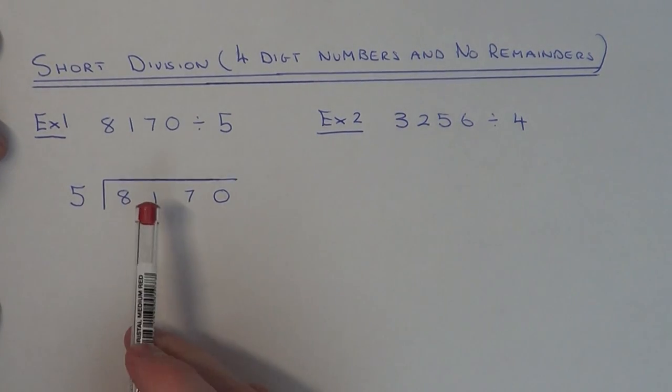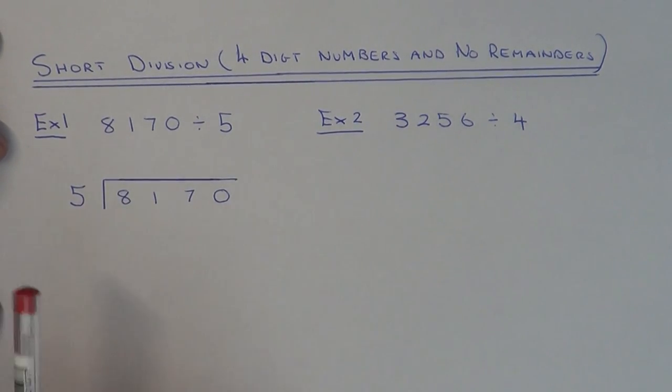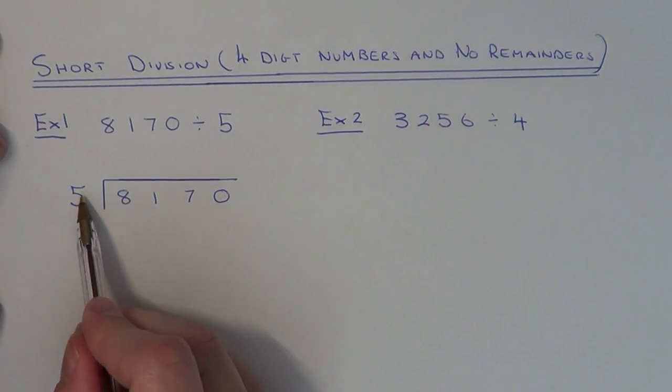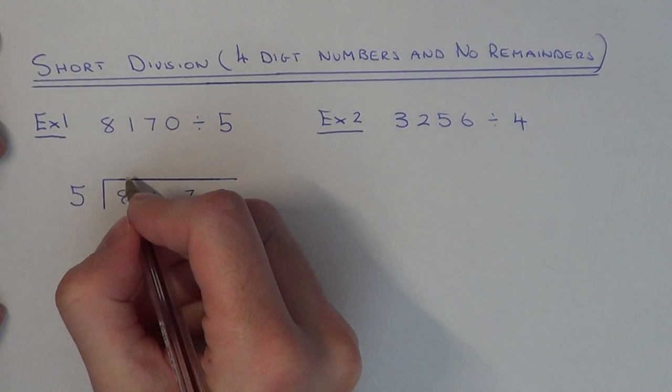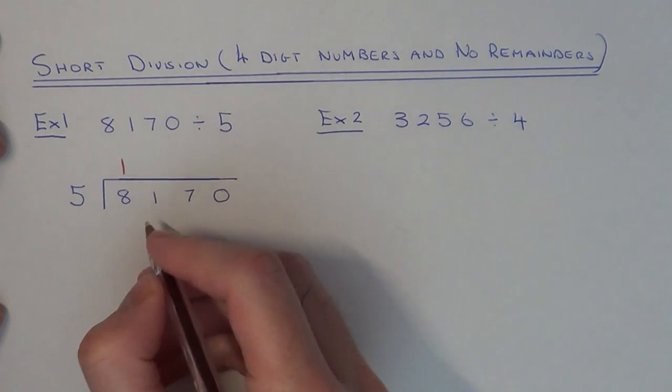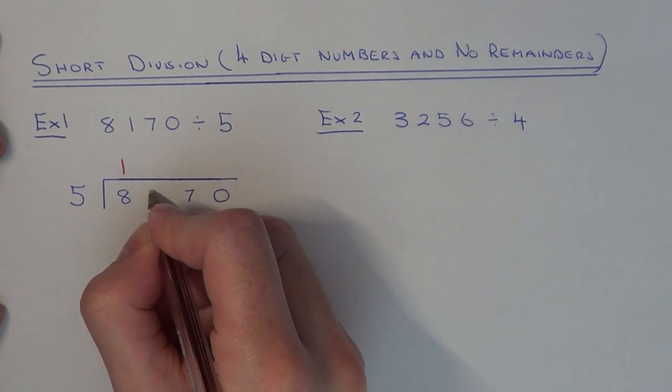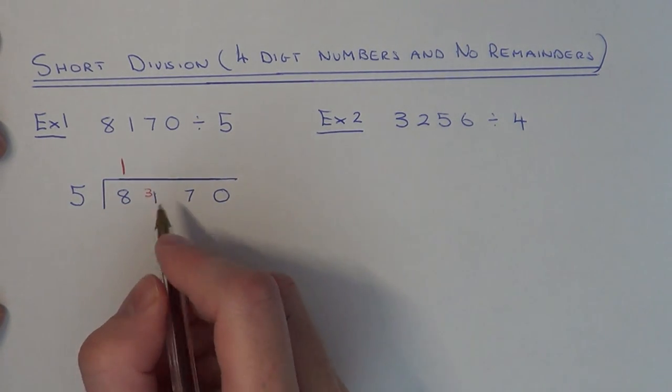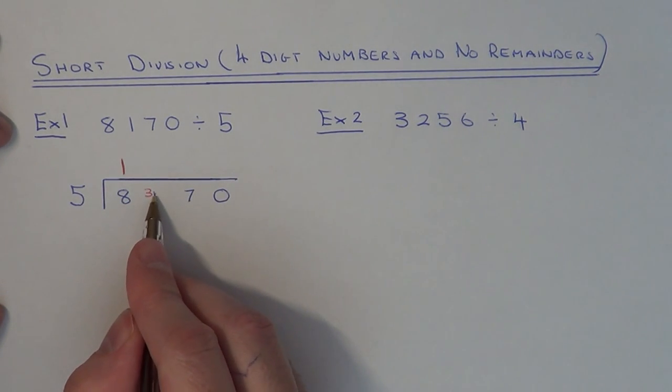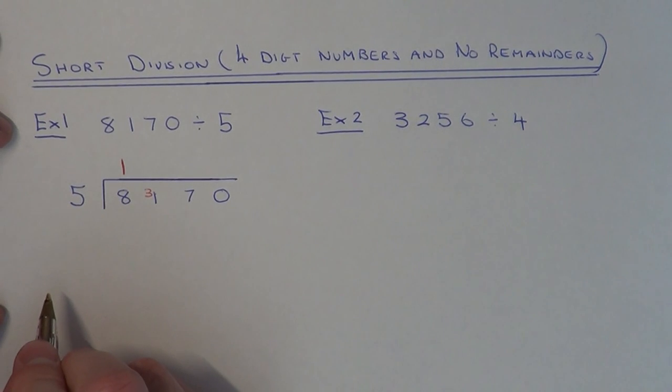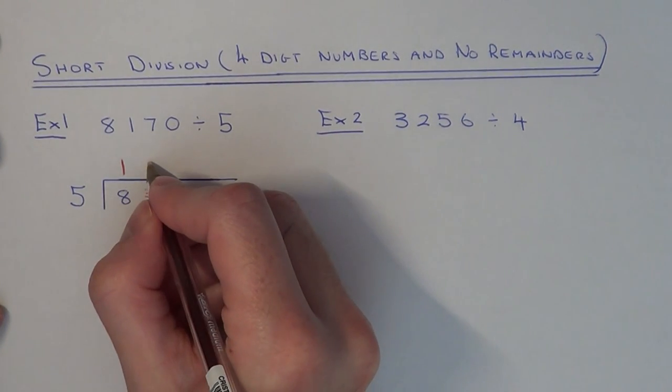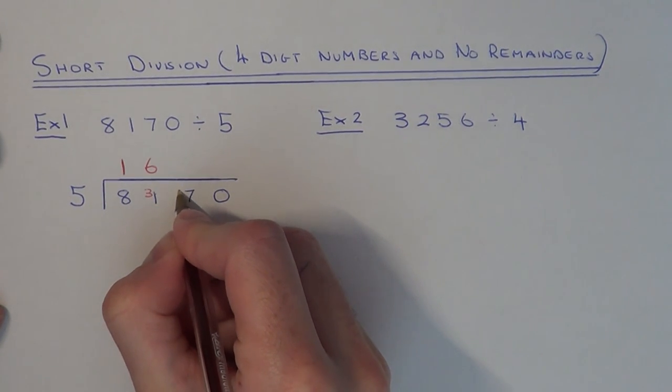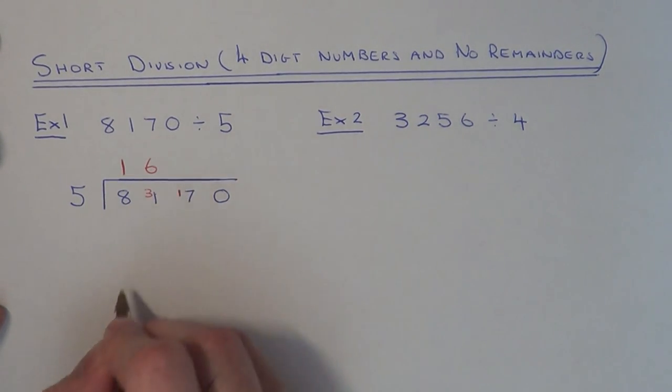All we need to do is divide each of the four digits by 5. First of all, we have 8 divided by 5. This gives 1 with a remainder of 3. Put the remainder down by the next digit to make 31. Next you do 31 divided by 5. This goes 6 times with a remainder of 1. Again, put that by the 7 to make 17.